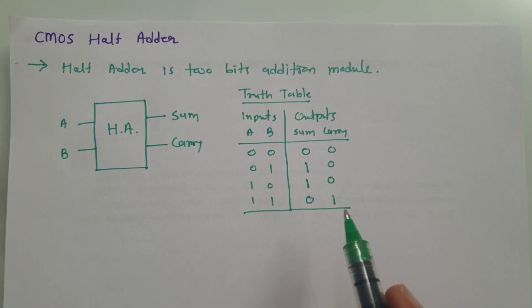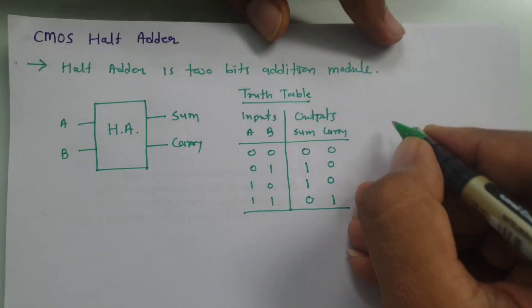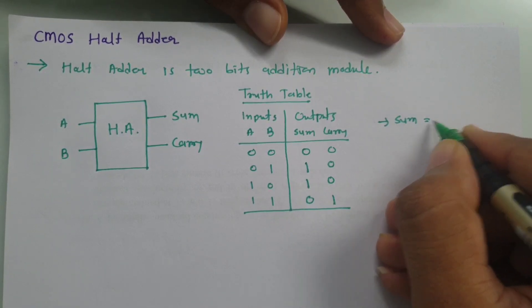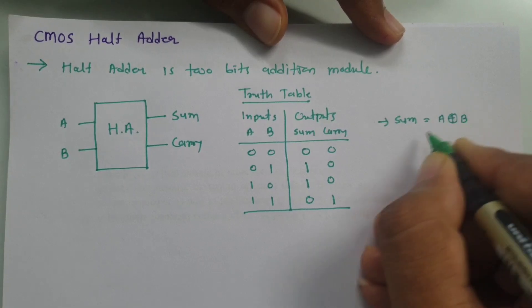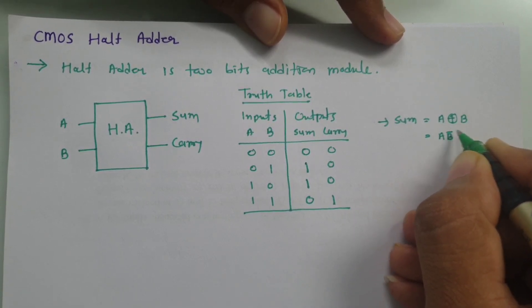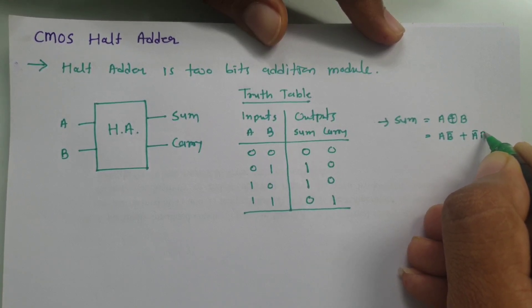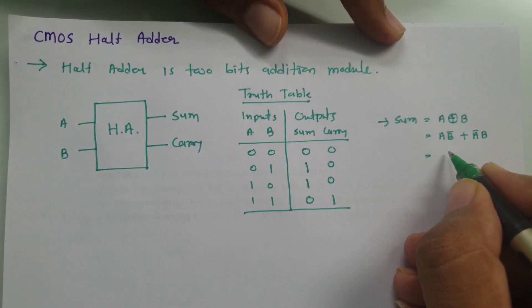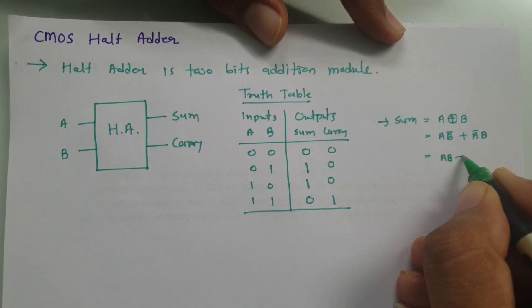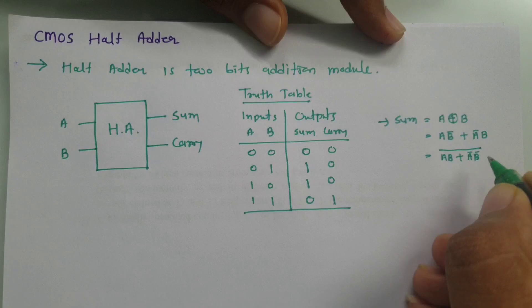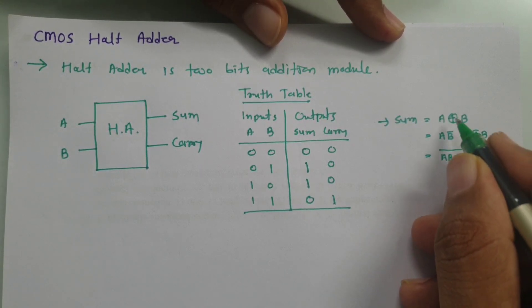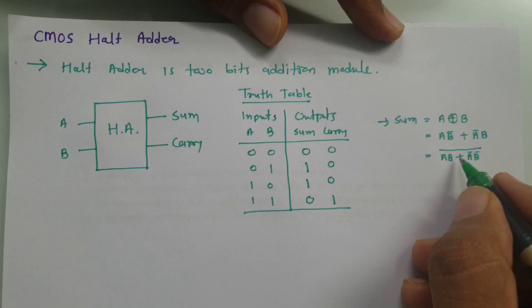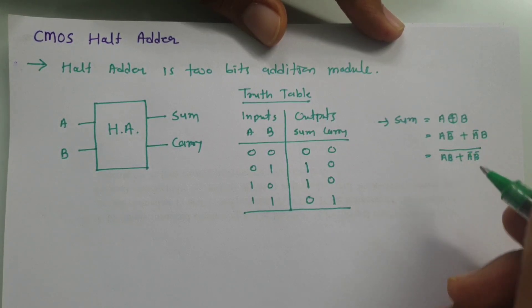Based on the truth table, we can clearly see that Sum is an XOR operation: Sum = A XOR B = AB̄ + ĀB. If we provide double inversion, it becomes (AB + ĀB̄)̄, which is XNOR with inversion — meaning XNOR inverted gives XOR. So this is our Sum expression.